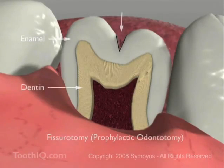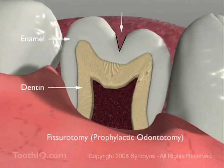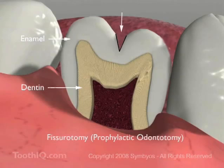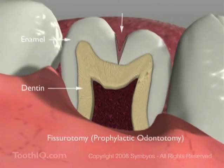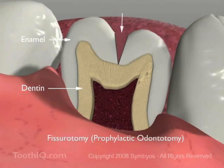Fissurotomy, or prophylactic odontotomy, involves funneling the grooves open with a cone-shaped dental burr. If done early enough in grooves that do not extend through the dentin layer, it may be possible to perform this procedure and nothing further. More commonly, however, the deepest pits and fissures do extend close to or into the dentin layer, and this procedure must be followed by placement of a filling of some type. The procedure must also be performed by a dentist, since it involves removal of tooth structure.